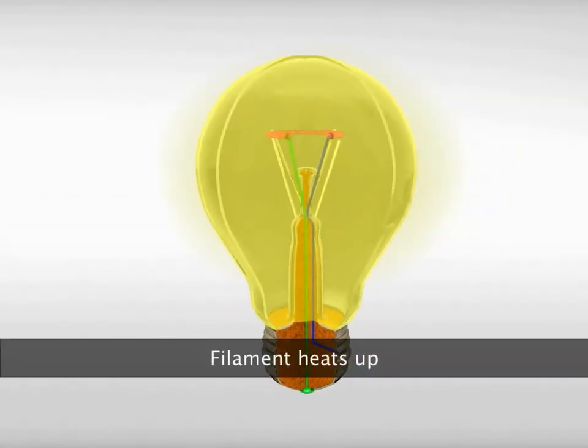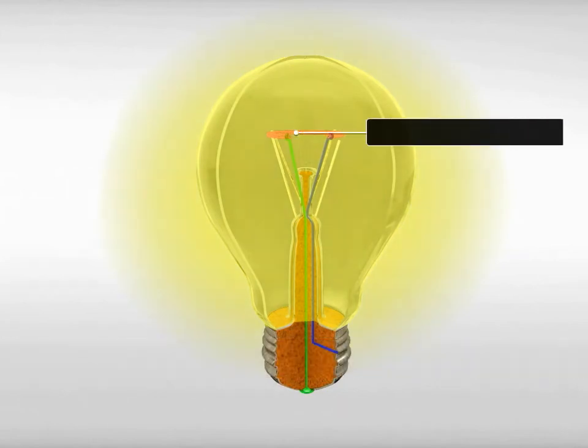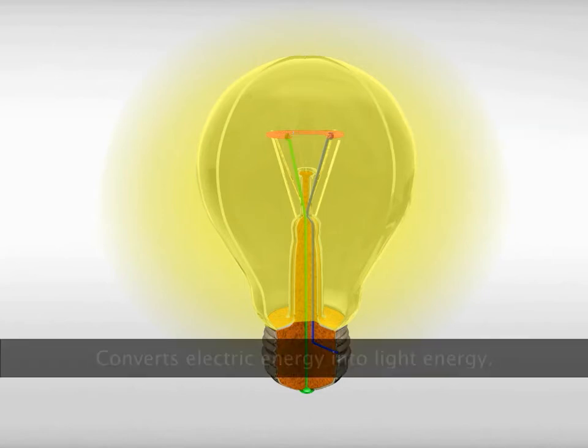When electricity flows through this filament, the bulb becomes hot and starts glowing, thus producing light. The hot filament also produces heat. So, the bulb converts electric energy into light energy.